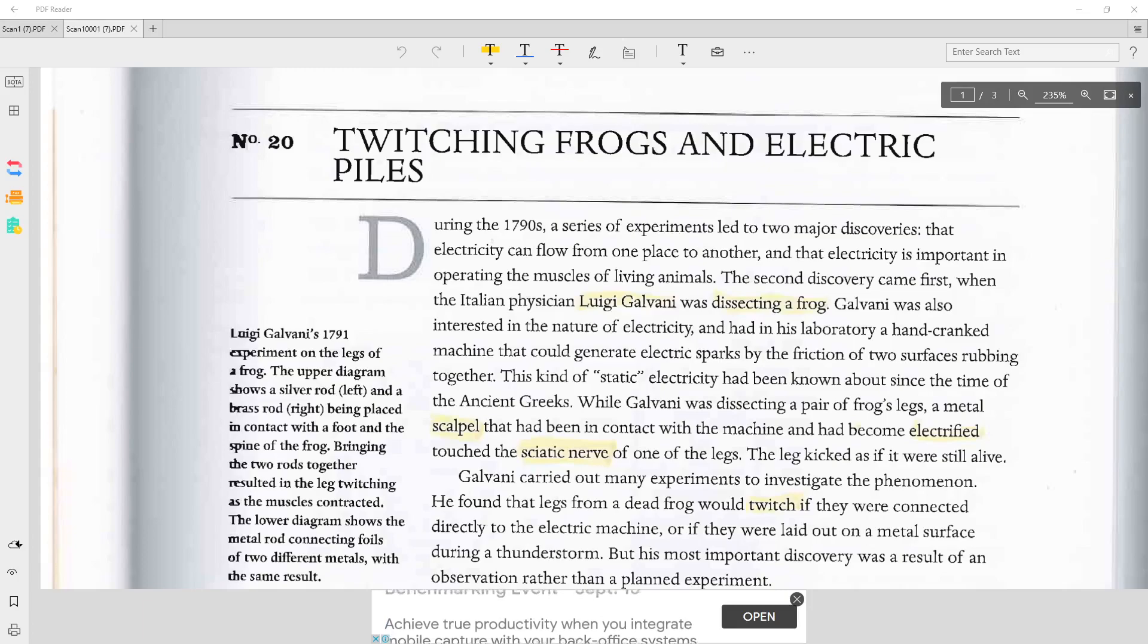Galvani was also interested in the nature of electricity and had in his laboratory a hand-cranked machine that could generate electric sparks by the friction of two surfaces rubbing together. This kind of static electricity had been known about since the time of the ancient Greeks.